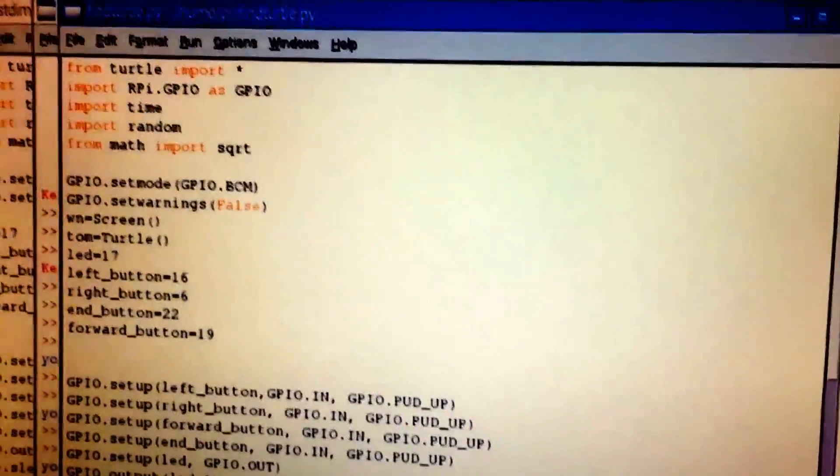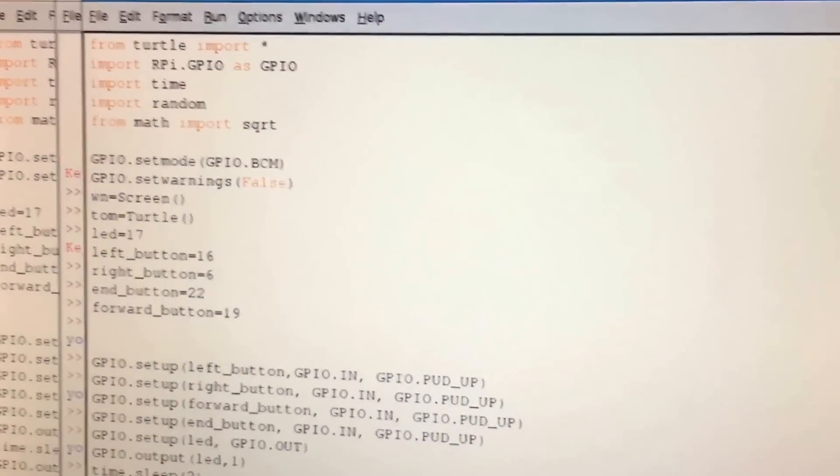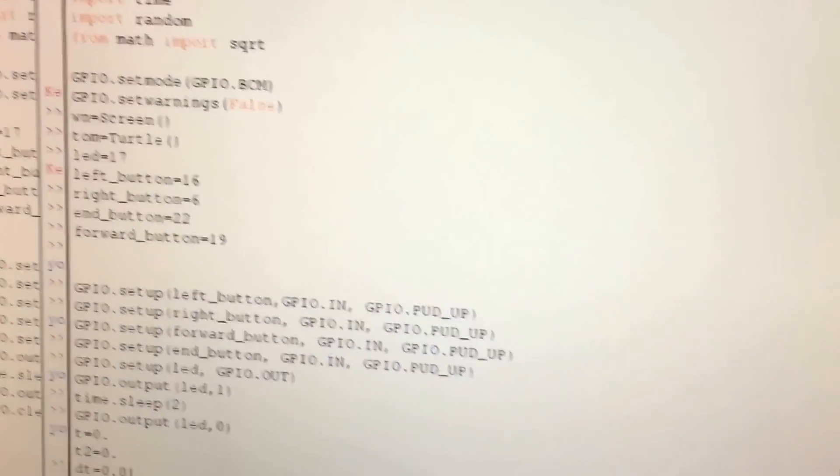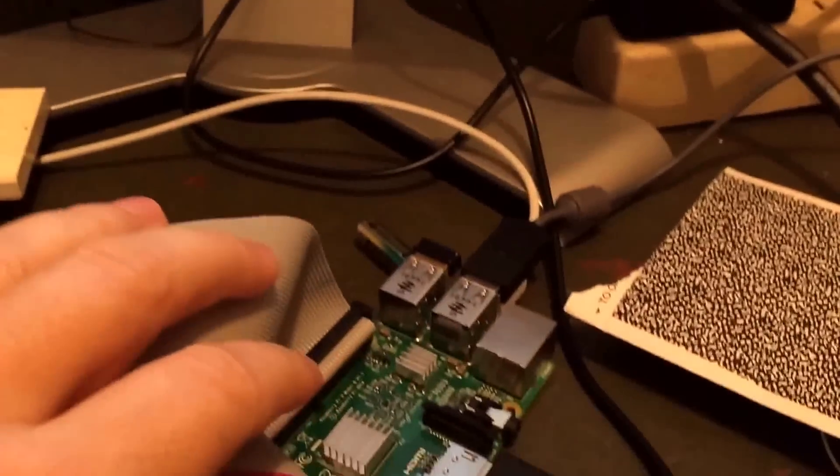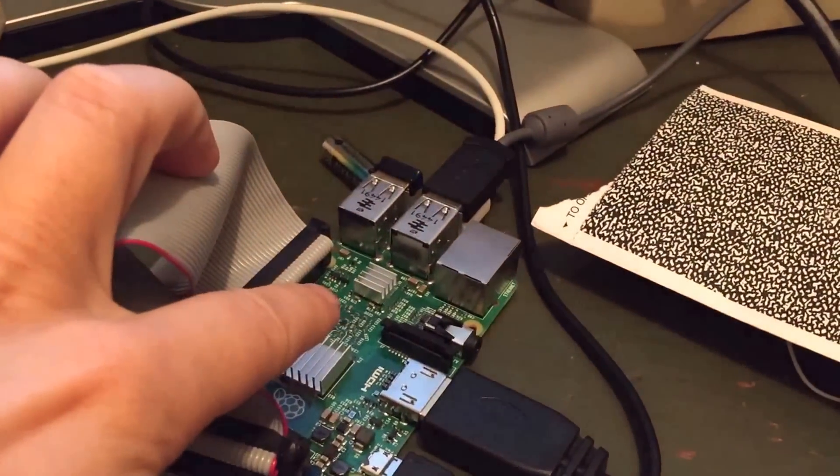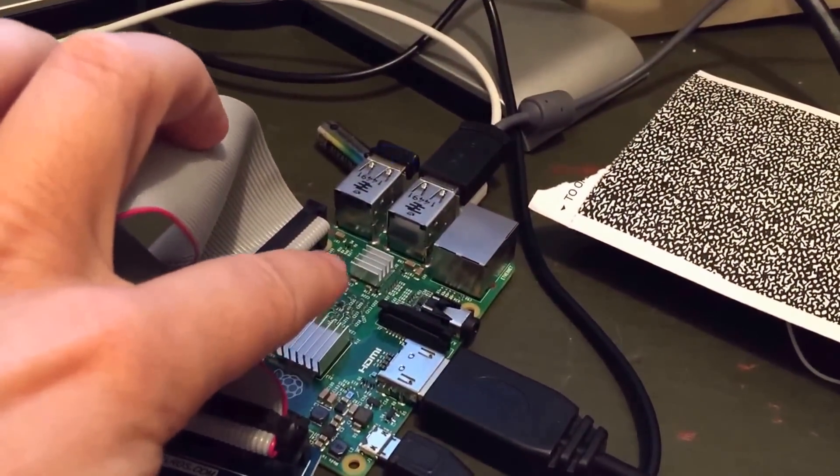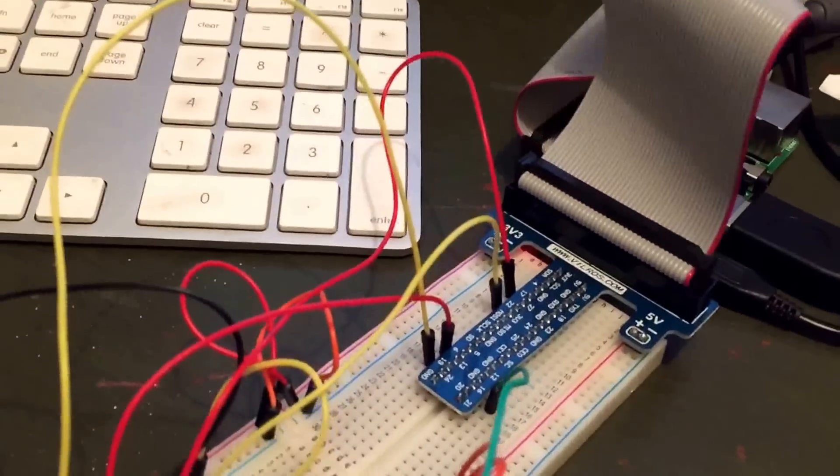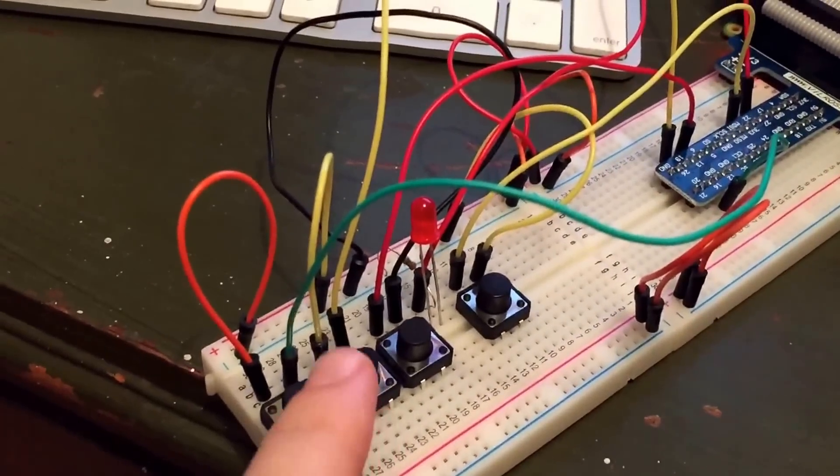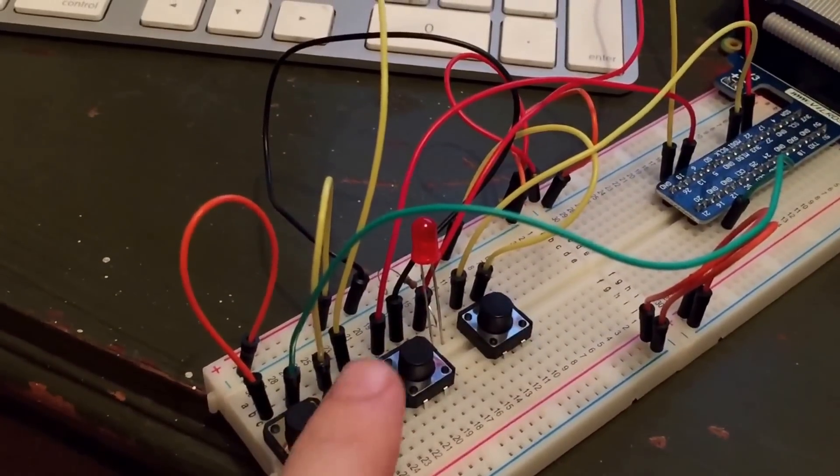Okay so I made a little program here, just want to share real quick. This is in Python using Raspberry Pi. So here I have my Raspberry Pi, it's a Raspberry Pi 2 Model B I think it is. And so over here I have a breakout board. I actually have four buttons, I only use three of them, and I have an LED.